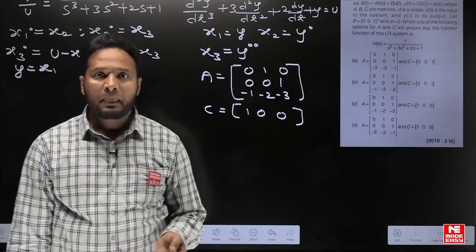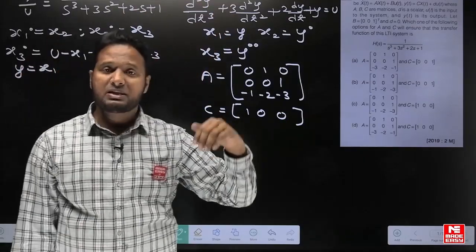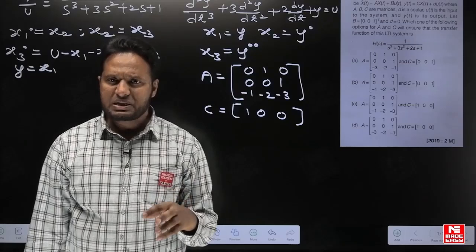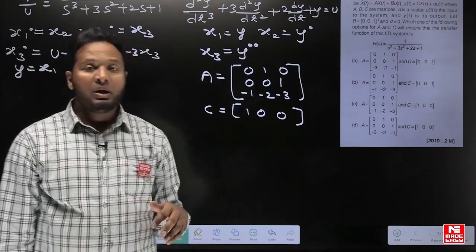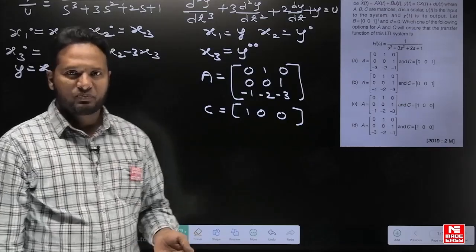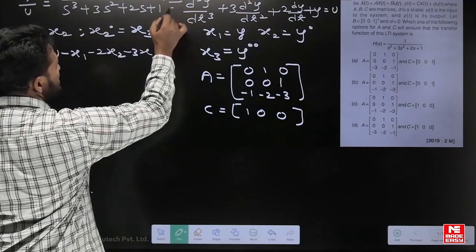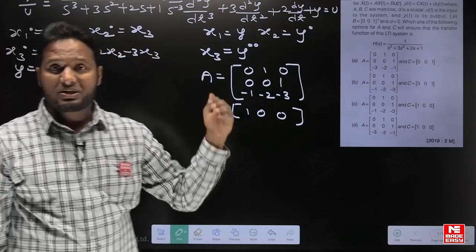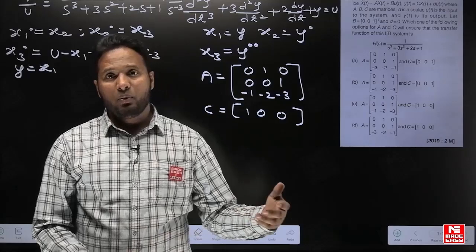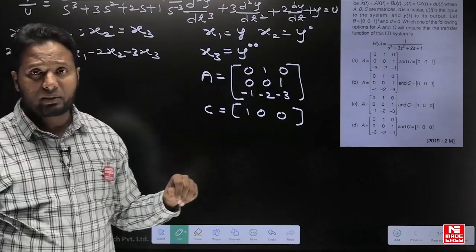A second method: rather than obtaining the differential equation, rationalize the transfer function by the highest power of s, then obtain the signal flow graph (state diagram) using Mason's formula, and derive the state model from that. Both methods work but the third method is the easiest.